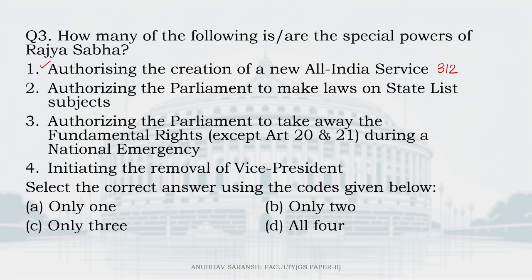Statement 2: authorizing Parliament to make laws on state list subjects — yes, this is Article 249, and it is correct. Statement 3: authorizing Parliament to take away fundamental rights except Articles 20 and 21 during a national emergency. This is Article 359, and it is NOT a special power of Rajya Sabha. It does not need parliamentary approval — all that is needed is a presidential order.